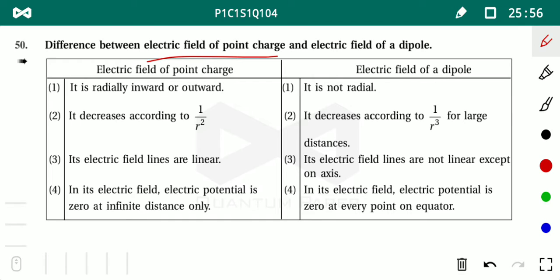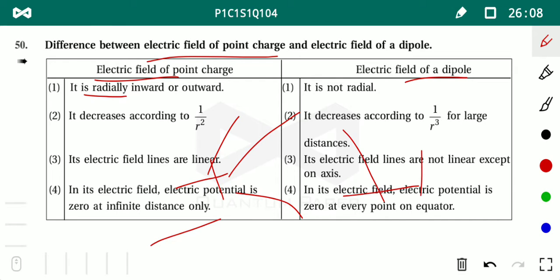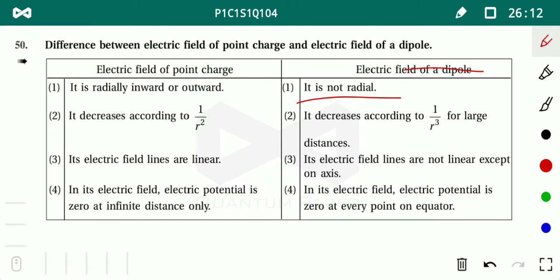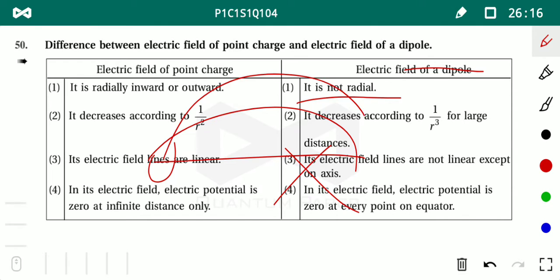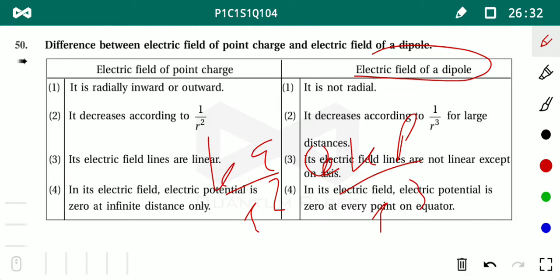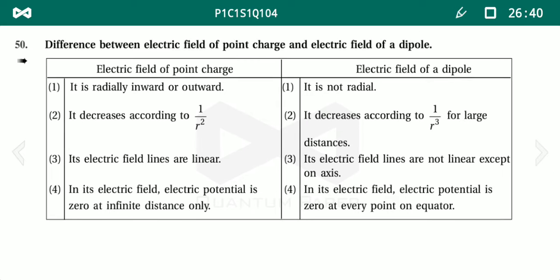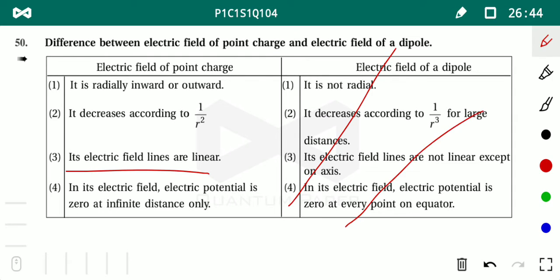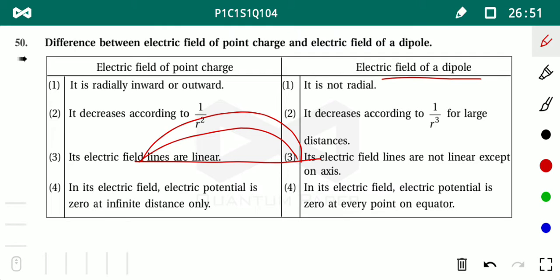What is the difference between electric field due to a point charge and due to a dipole? For a point charge, the field is radially inward or outward. For a dipole, the field is not purely radial — it appears curved except along the axis. A point charge field equation is kq/r², while a dipole gives 2kp/r³ (axial) or −kp/r³ (equatorial) — decreasing with r³.